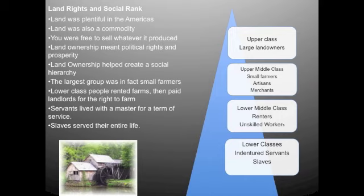Life in the colonies was based on social class and land ownership, just as it was in England. Land was plentiful in the Americas but also a commodity — if you had land, you could sell whatever you produced on it. Land ownership meant political rights and prosperity, and it helped create a social hierarchy throughout all the colonies, though the South was the most distinct. The largest group was in fact small farmers — low-class people who rented farms and paid the landlord for the right to farm there.